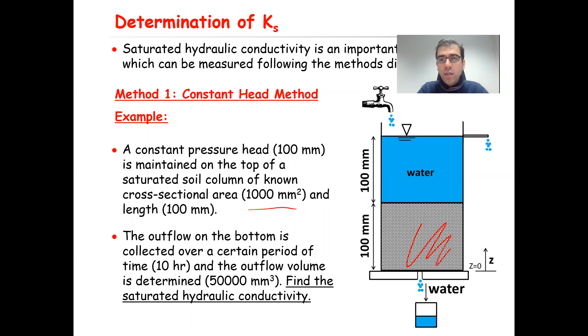So here this is your soil column. The length of the soil is 100 millimeters, you have 100 millimeters of water always maintained on top of the soil column, and then the outflow on the bottom is collected over a certain period of time, let's say for example over 10 hours, and the outflow volume is determined to be 50,000 cubic millimeters. You collect this outflow, and in 10 hours you collect 50,000 cubic millimeters. The question is, find the saturated hydraulic conductivity.